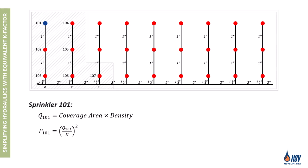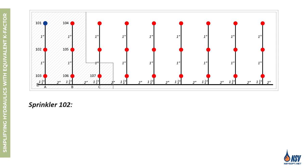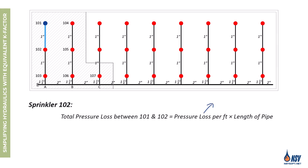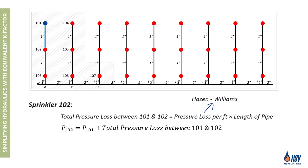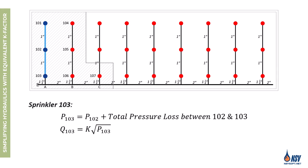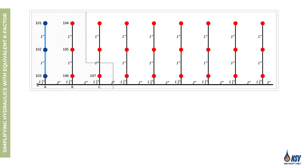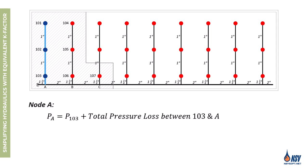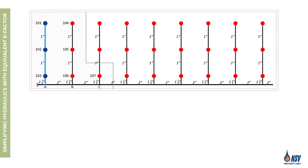For sprinkler 101, we calculate the flow rate by multiplying its coverage area by the required density. Once we have the flow rate, the pressure is determined by dividing the flow rate by the K factor and squaring the result. We then move on to sprinkler 102 — the pressure loss in the pipe between these two sprinklers is determined using the Hazen-Williams formula. Once we know that loss, we find the pressure at sprinkler 102 and calculate its flow rate. We continue this step-by-step process for sprinkler 103, then determine the pressure at node A, which represents the intersection between the most remote branch line and the cross main.